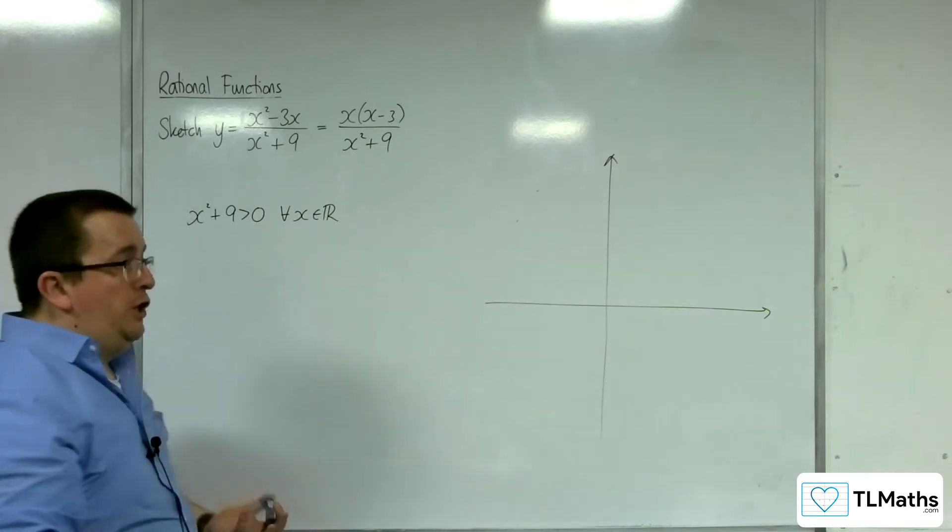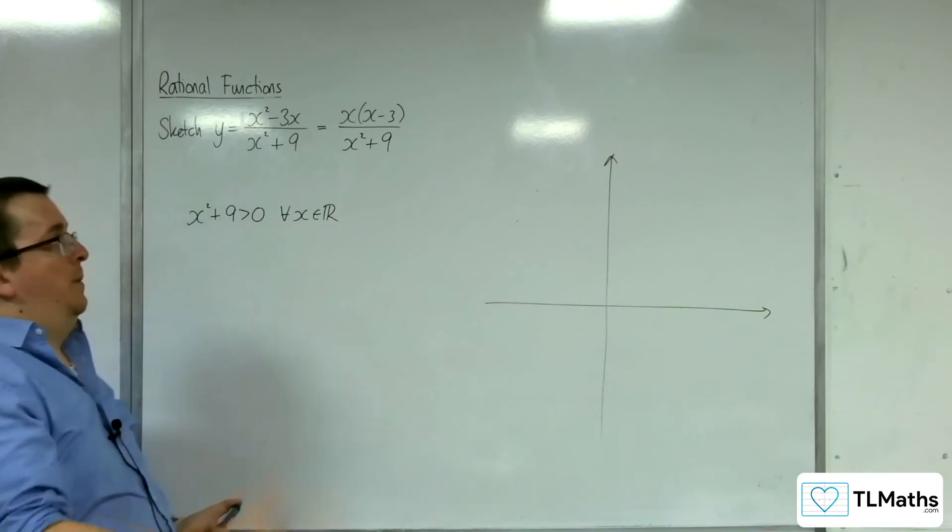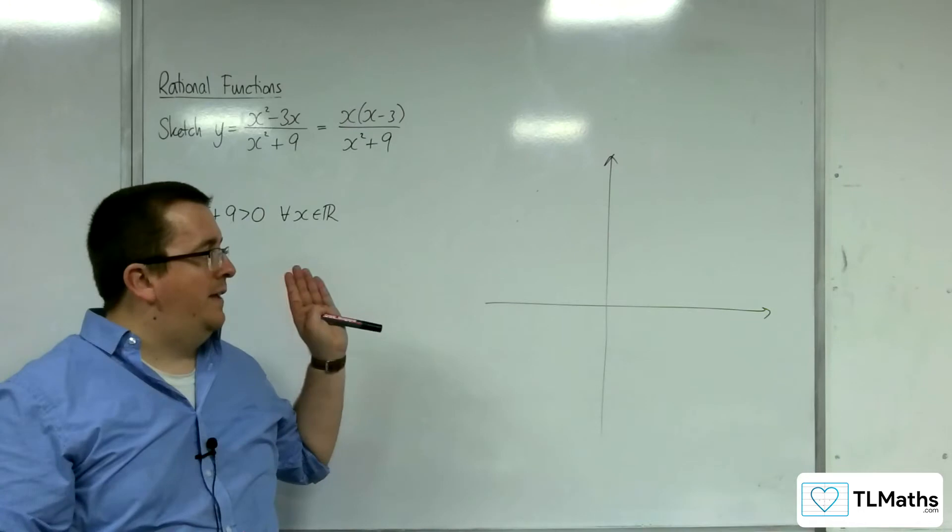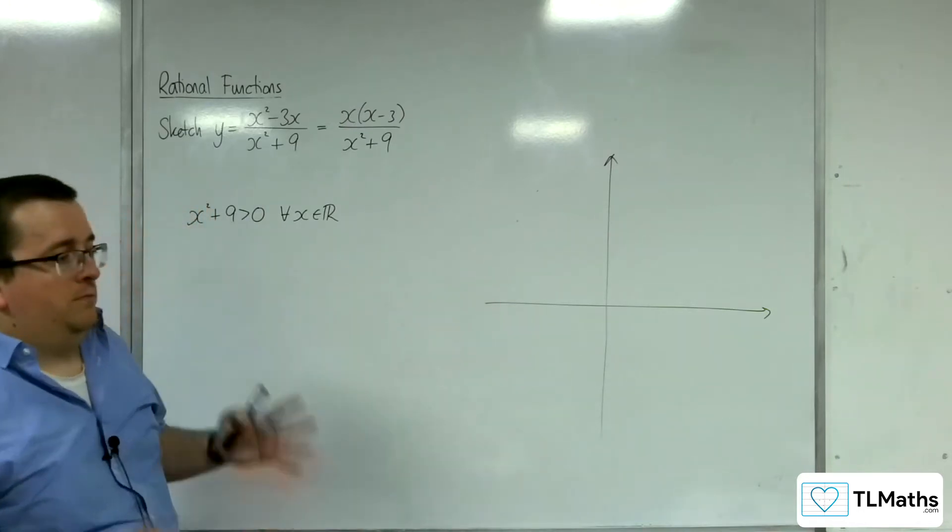Right, this is unusual because of what we've done previously. You know, it's taken it this far to get to a point where the denominator can't be 0. Okay, so no vertical asymptotes.